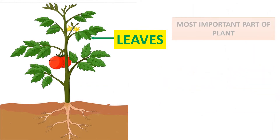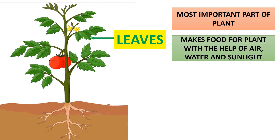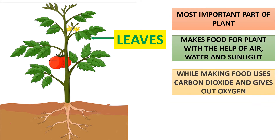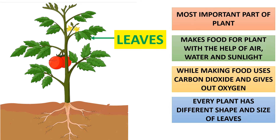Leaves are the most important part of the plant. They make food for the plant with the help of air, water, and sunlight. While making food, leaves use carbon dioxide and release oxygen into the environment. Every plant has a different shape and size of leaves.